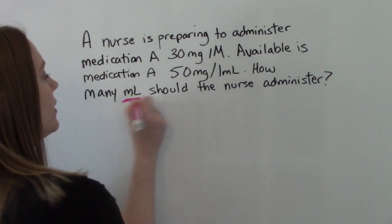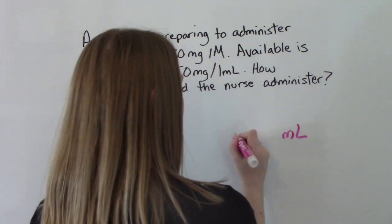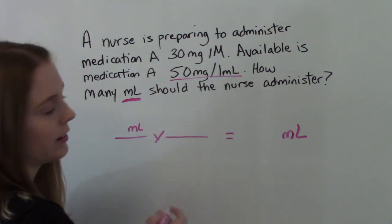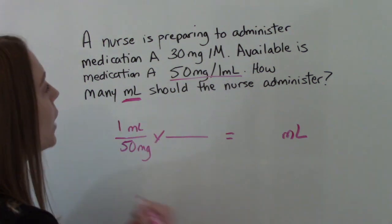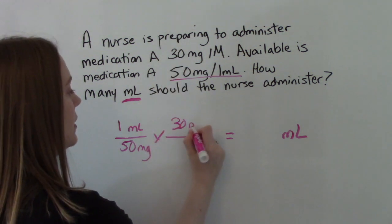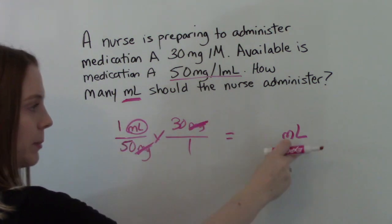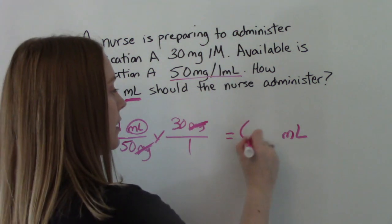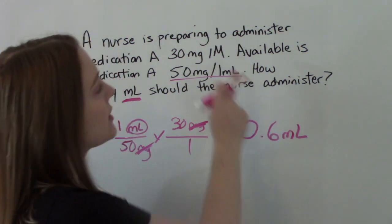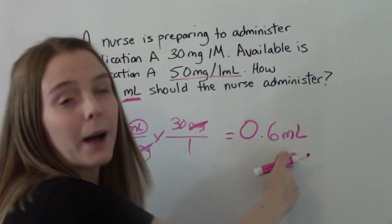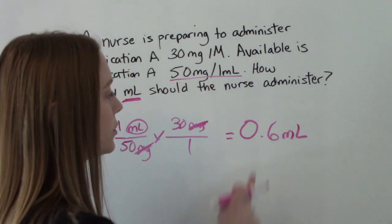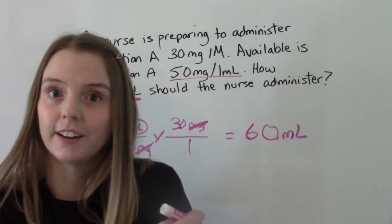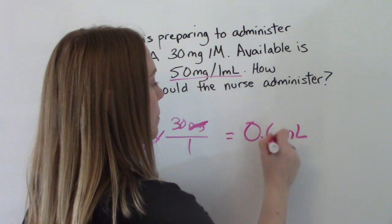What are we looking for? We're looking for mLs, so we put that in our answer. Since it's in our answer it needs to be in our numerator. From the problem, 1 mL equals 50 mg — so 1 mL goes in the numerator and 50 mg in the denominator. The milligrams cancel, leaving us with just mLs. Do the math: 1 times 30 divided by 50 times 1. You divide 30 by 50 and get 0.6 mL. This is for an IM injection, so that's a reasonable amount. If you did the math wrong and got 60 mL, that wouldn't make sense — that would be way too much for an IM injection. Our answer is 0.6 mL.